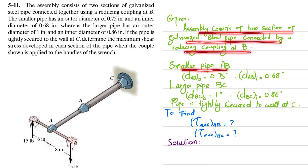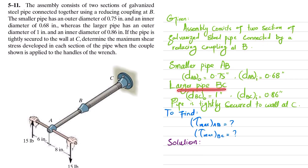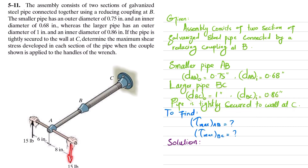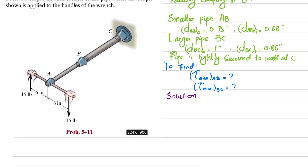Smaller pipe AB has outer diameter 0.75 inch and inner diameter 0.68 inch, while larger pipe BC has outer diameter 1 inch and inner diameter 0.86 inch. The pipe is tightly secured to the wall and the coupling is applied. We need to find the maximum shearing stress in AB and maximum shearing stress in BC. The shearing stress formula is: τ = T·c / J.